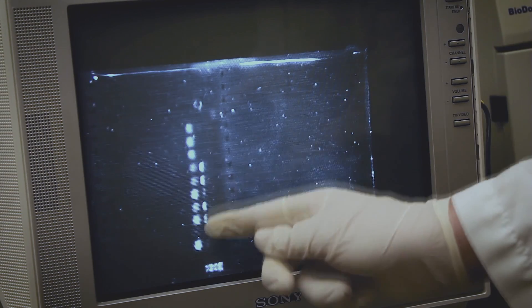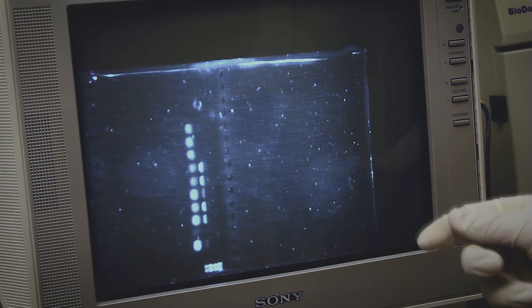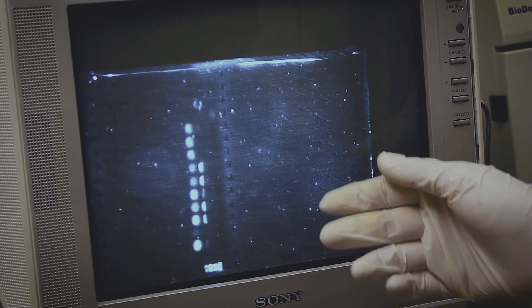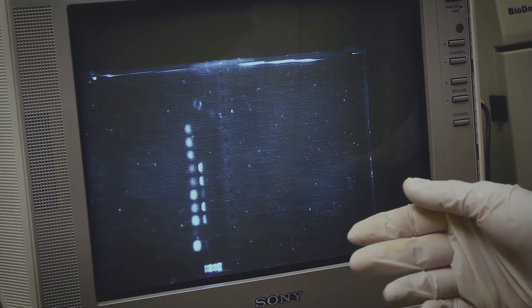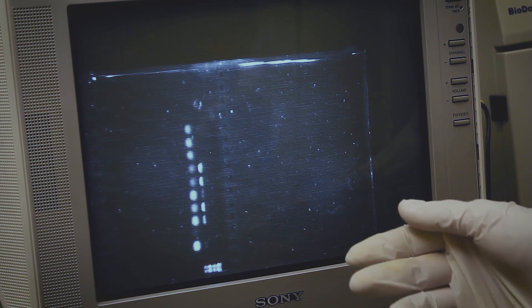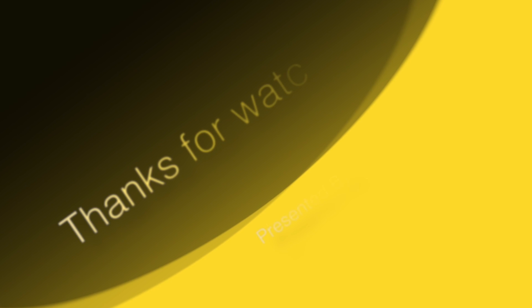These extra bands are primer dimers. The primers have amplified instead of the target DNA. It is not a huge problem unless all you see is the primer dimer bands.